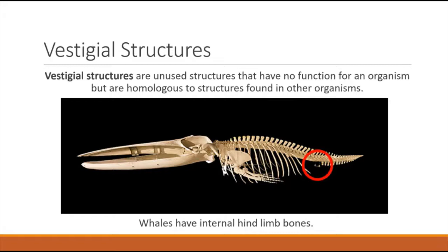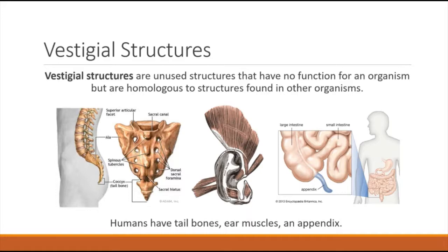Whales and dolphins have internal hind limb bones visible in their skeleton but not externally, because whales are descended from a mammal that used to have four limbs. Humans also have vestigial structures: tail bones (though we don't have a tail), ear muscles (though we cannot use them to move our ears significantly), and an appendix. All of these are descended from ancestors that used to have these features, but we no longer need them — yet these little artifacts of those structures remain.